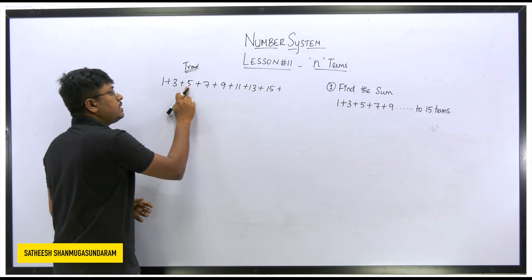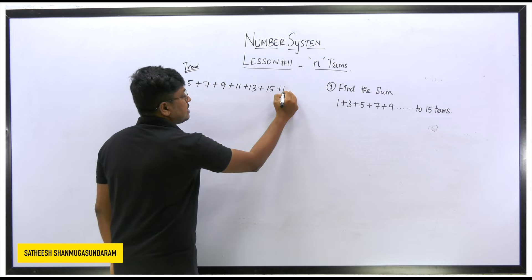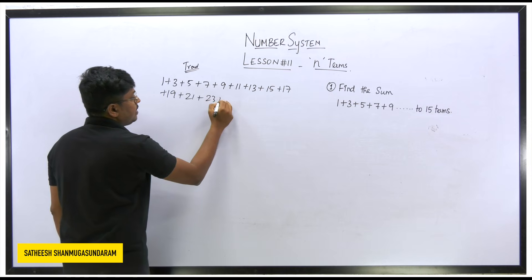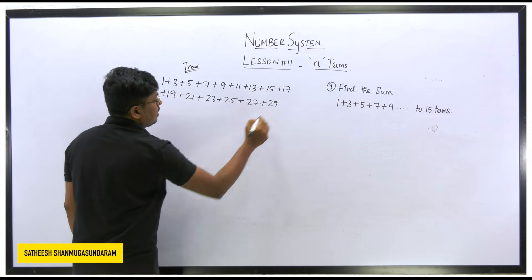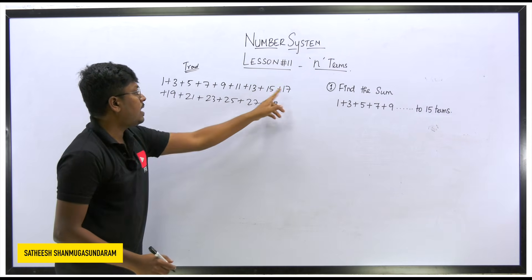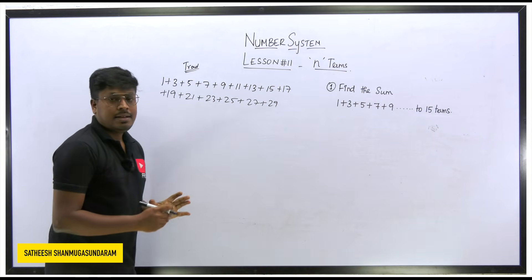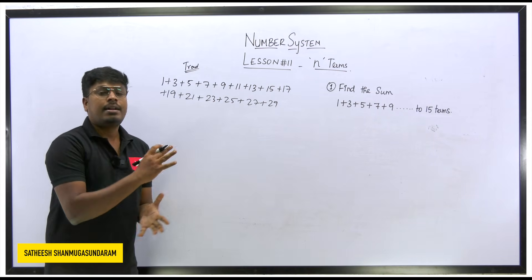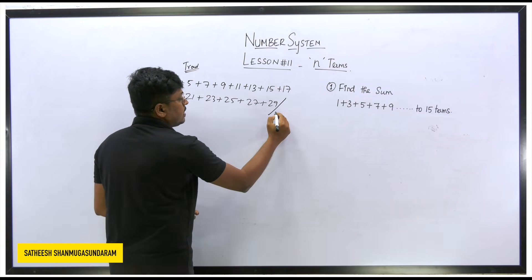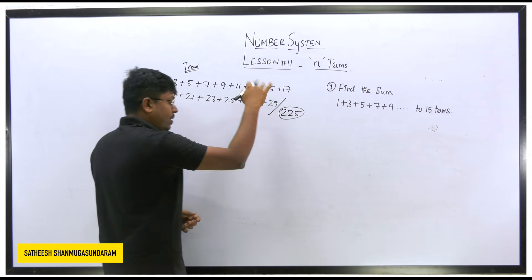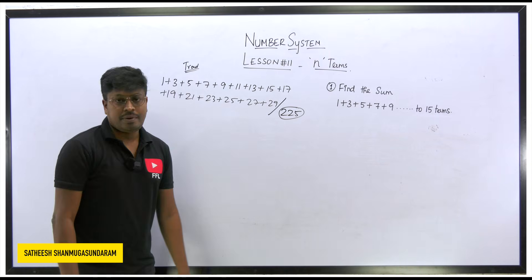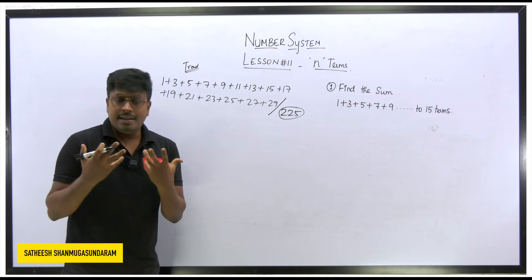So writing out all 15 terms of the odd number series: 1, 3, 5, 7, 9, 11, 13, 15, 17, 19, 21, 23, 25, 27, 29. That's exactly 15 terms — count them: 1 through 15. Adding all these numbers together gives us 225. That's the traditional method. But as I mentioned, for larger numbers of terms like 99 or 200, you can't do this in an exam.